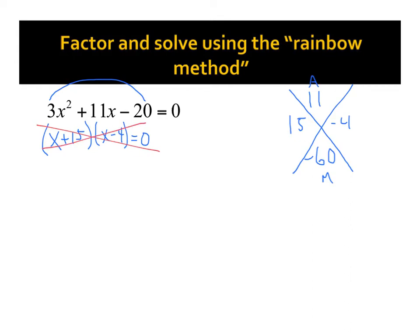Here's what we have to do. It's a little bit more difficult and more fun. We have our 3x squared, and I'm going to split that 11x up into 15x minus 4x. So 15x minus 4x, that gives me 11x, right?